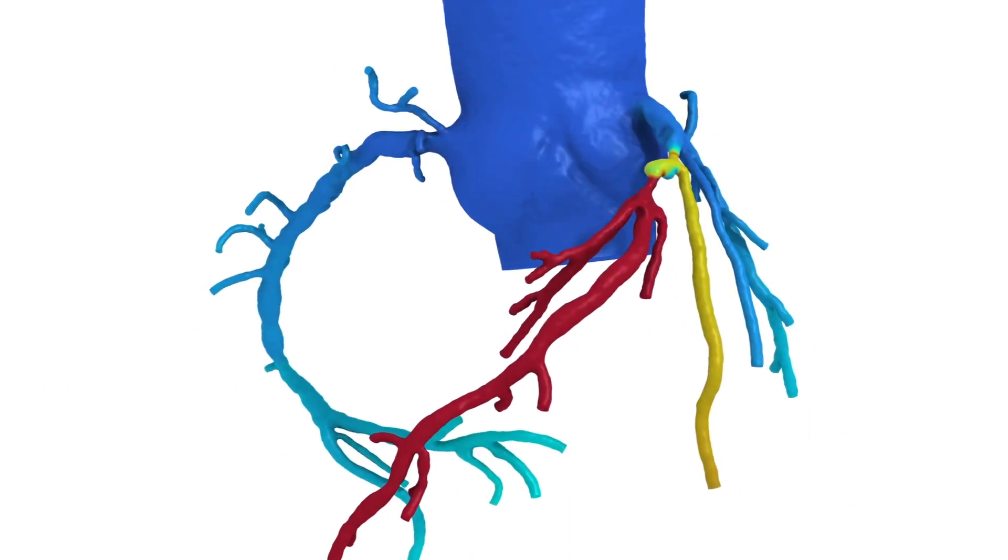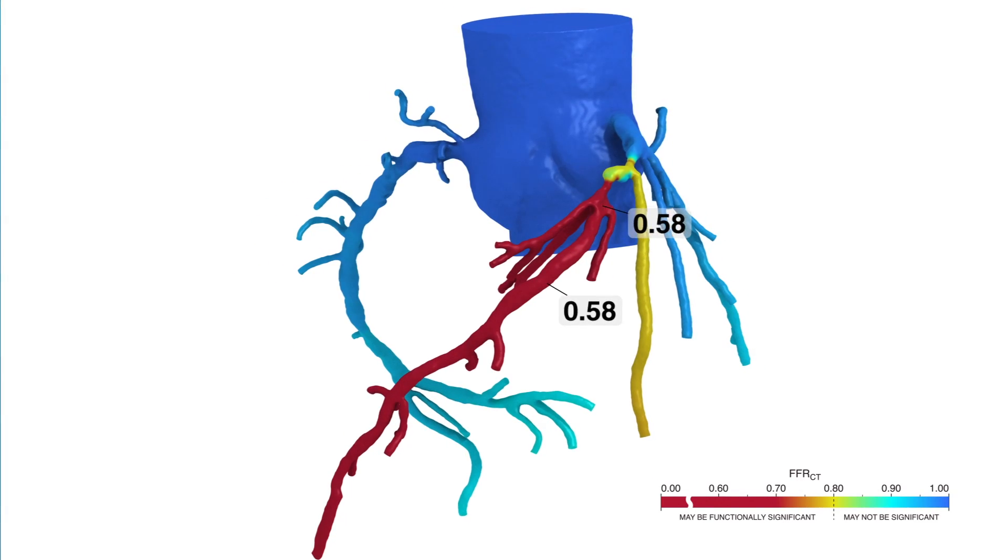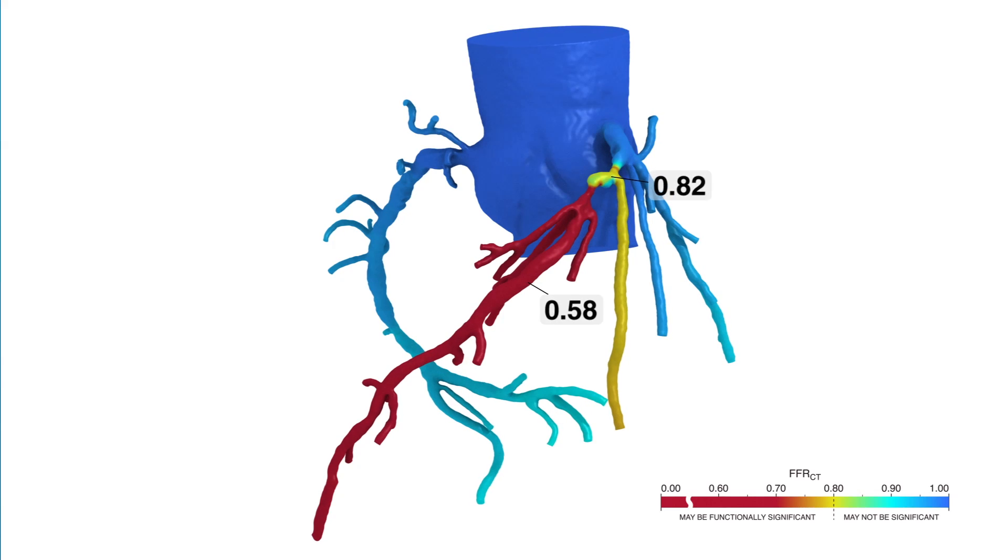The end result of the HeartFlow Analysis is a color-coded map of the coronary arteries, showing the extent to which any narrowings are disrupting blood flow.